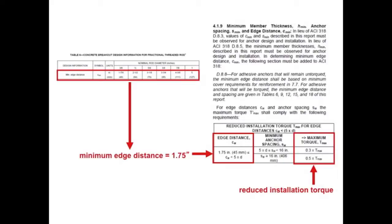The Evaluation Service Reports for Hilti HY150 Max, HY150 Max SD, and RE500 SD adhesive anchor systems contain provisions which permit the anchors to be installed at edge distances as close as 1.75 inches. Note that the 1.75 inch edge distance is less than the minimum edge distance values given in the design tables of these Evaluation Service Reports. The minimum edge distance of 1.75 inches can only be used if the anchor is installed at a reduced installation torque.